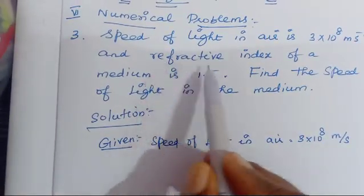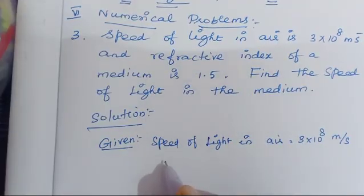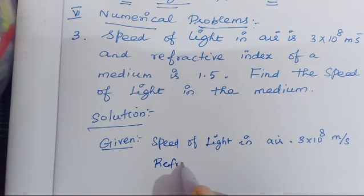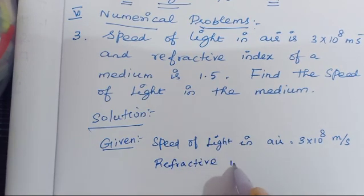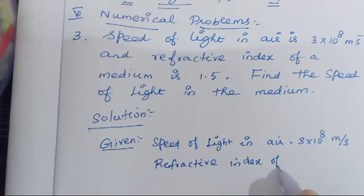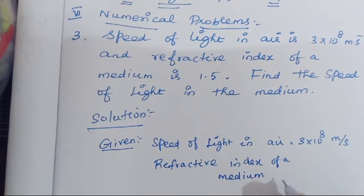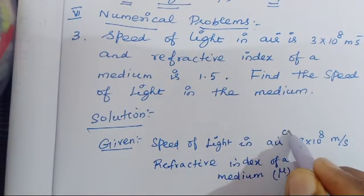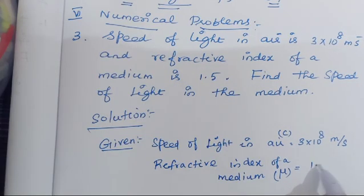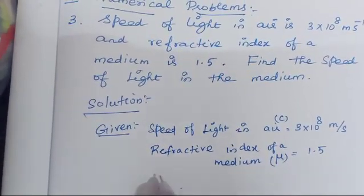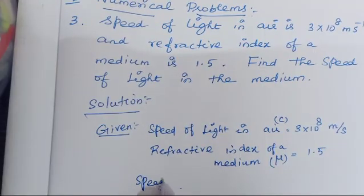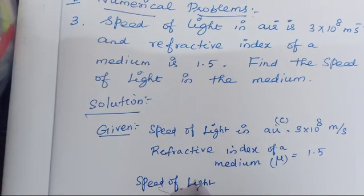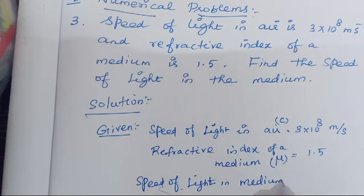The next value is refractive index of a medium, which is 1.5. Refractive index of a medium is represented by the letter mu (μ), and its value is 1.5. We have to calculate the speed of light in the medium, which is denoted by the letter V, and that is what we need to find.